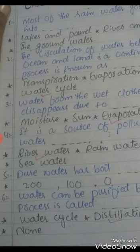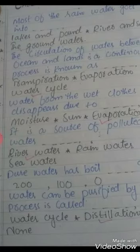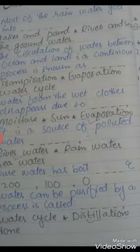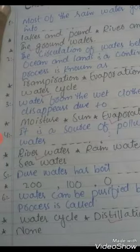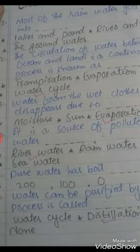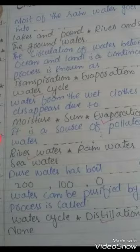Number 5: Pure water has boiled dash degree centigrade. Options: 200, 100, 0. The correct answer is 0 degree centigrade.